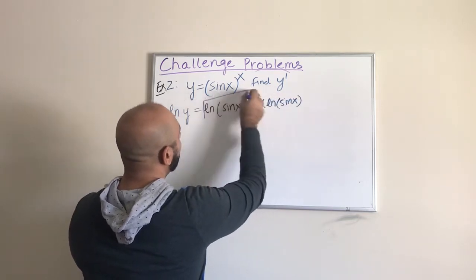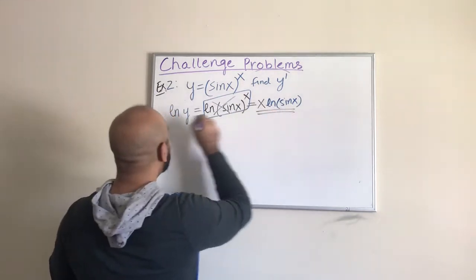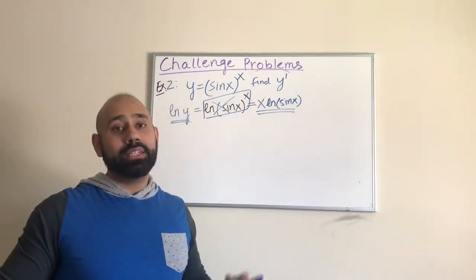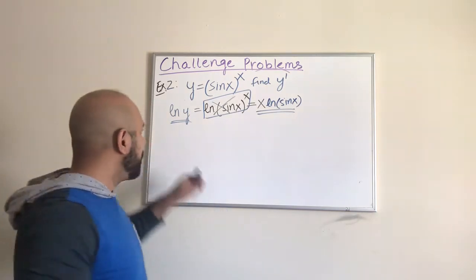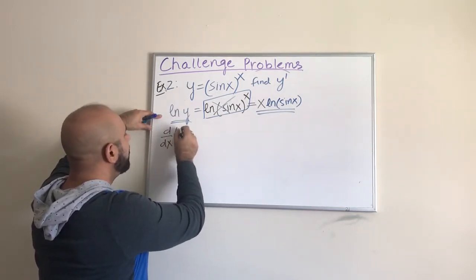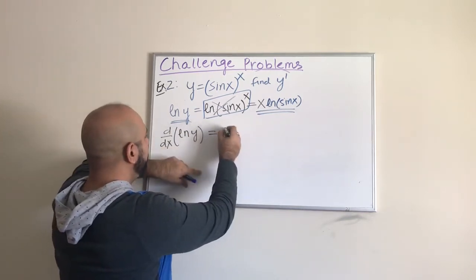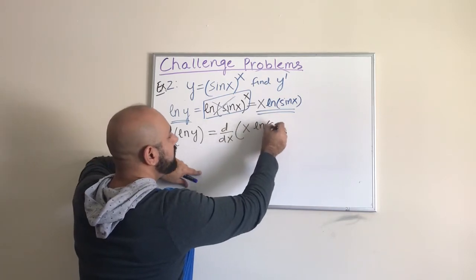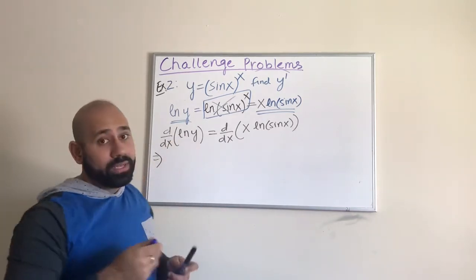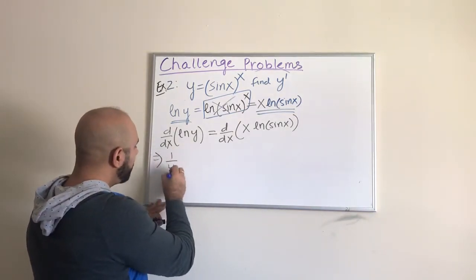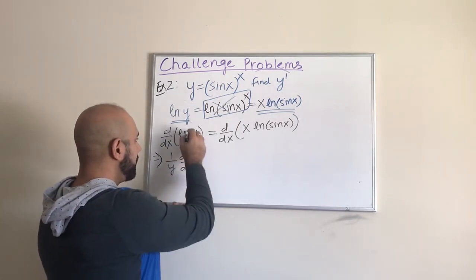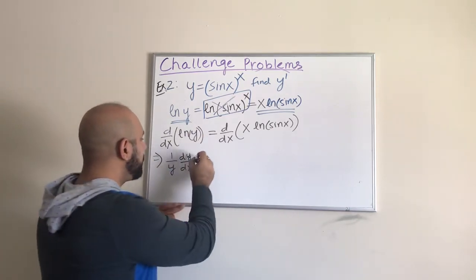Now I'll focus on this simplified equation. We want to find the derivative of y, so we take the derivative on both sides: d/dx of ln(y) on the left equals d/dx of x·ln(sin(x)) on the right. For the left side, the derivative of ln(y) is 1 over y, but we also have to multiply by the derivative of the inner function, which is dy/dx.